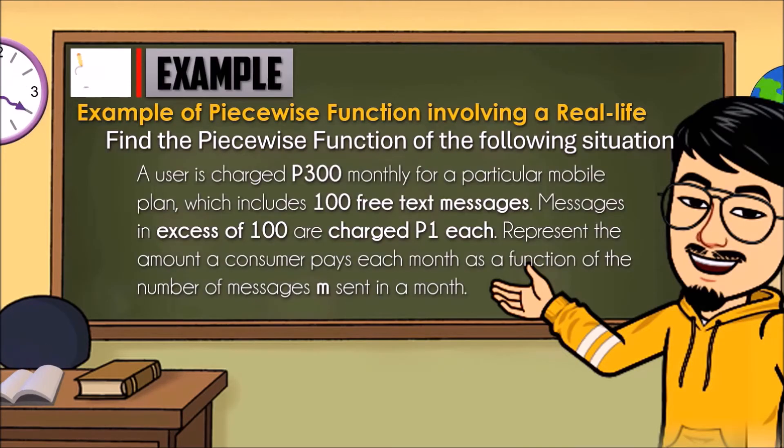A user is charged P300 monthly for a particular mobile plan, which includes 100 free text messages. Messages in excess of 100 are charged P1 each. Represent the amount a consumer pays each month as a function of the number of messages M sent in a month.